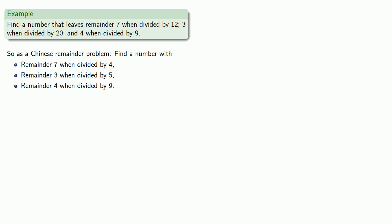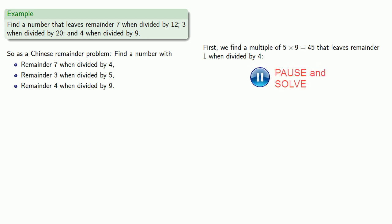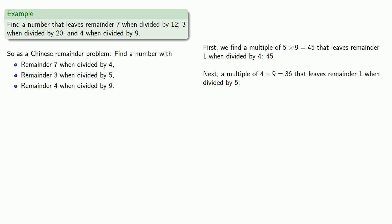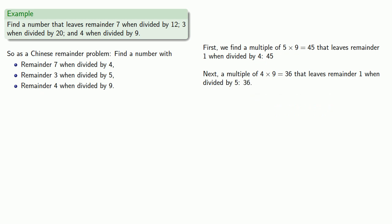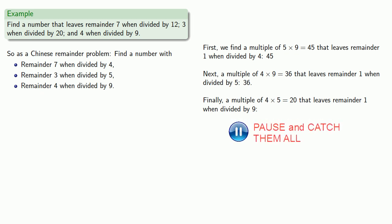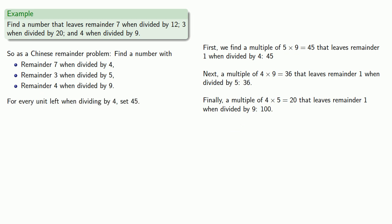First, let's find our set numbers. We want a multiple of 5 times 9, which is 45, that leaves remainder 1 when divided by 4 — and that number is 45. Next, we want a multiple of 4 times 9, which is 36, that leaves remainder 1 when divided by 5 — and that number is 36. Finally, we want a multiple of 4 times 5, which is 20, that leaves remainder 1 when divided by 9 — and that number is 100. So for every unit left when dividing by 4, set 45; for every unit left when dividing by 5, set 36; and for every unit left when dividing by 9, set 100.